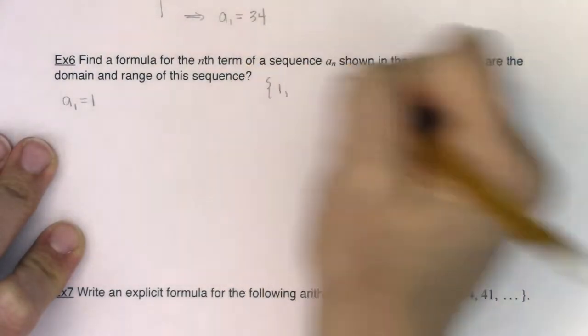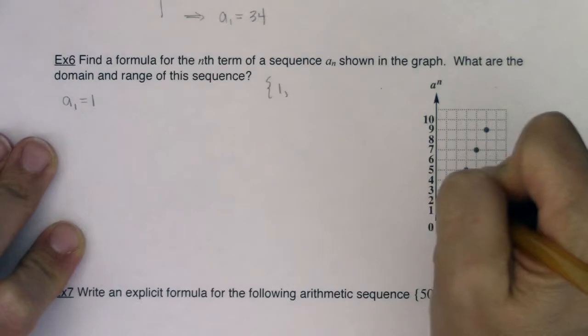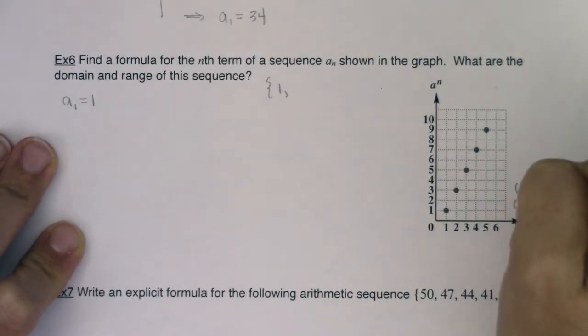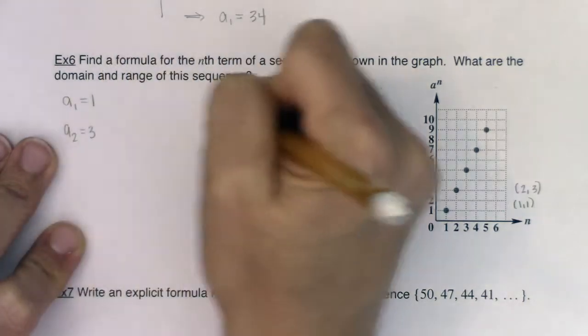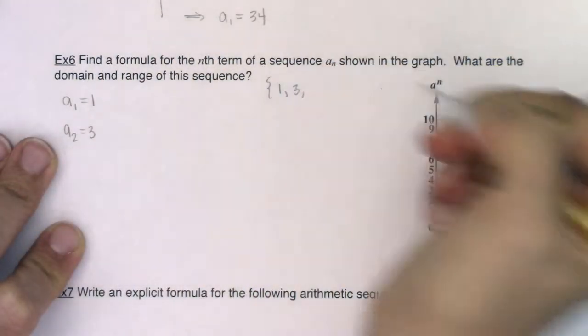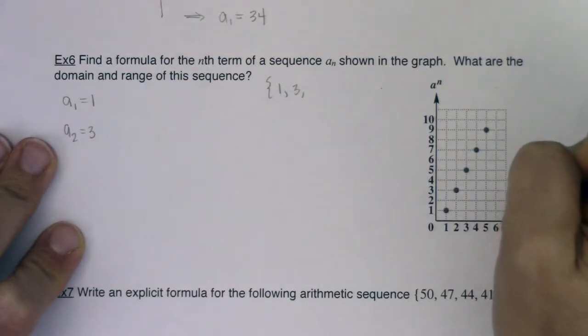If I start to write this sequence, I have a 1. Let's take a look at the second ordered pair. It looks like the n value is 2, but the a sub n value is 3. So I know a sub 2 is equal to 3. We've got a sub 3, or I should say 3, 5. Let me plot these out.